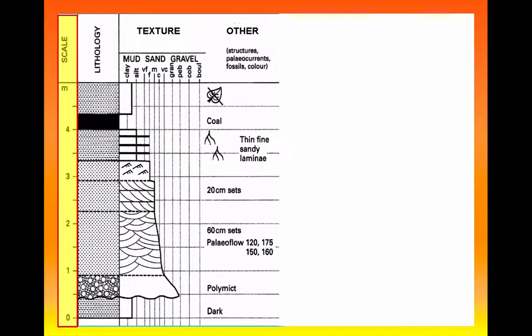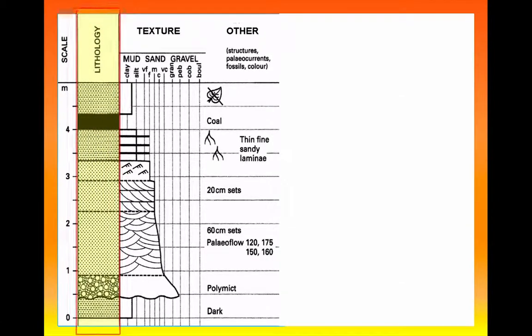The next part of the data is the lithology. You can see individual beds are shown here by the horizontal lines. Different lines represent different types of boundary, so a solid line would be a sharp boundary between beds, a dashed line would be a gradational boundary, one that changes gradually from one to another. The wavy line you can see near the bottom represents an erosional surface.